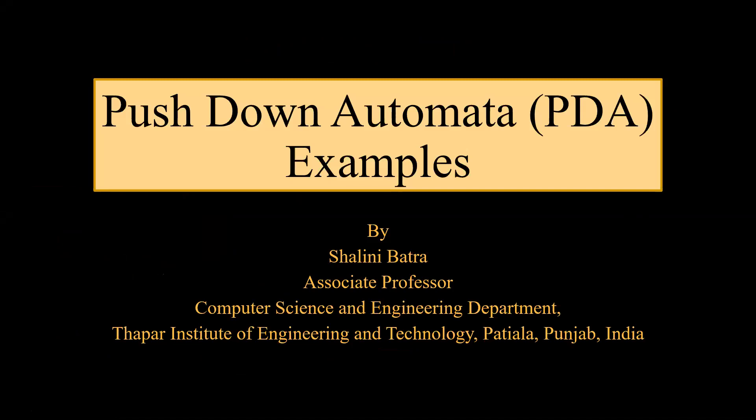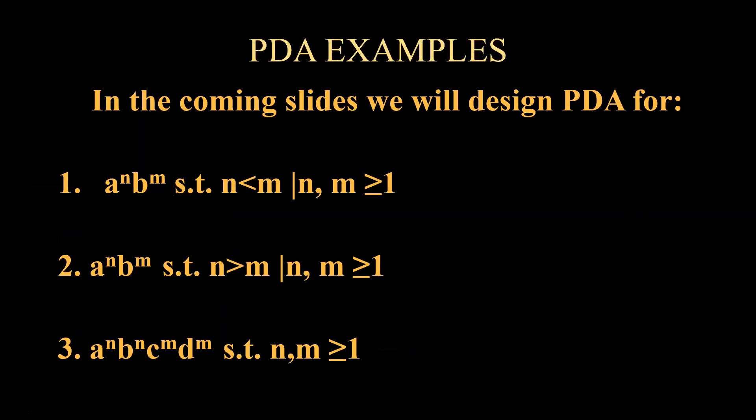Hello everyone. Today we will be discussing some examples of pushdown automata. We have already covered two videos on examples and this is the third one in that set. Today we will be covering three pushdown automatas: aⁿbᵐ such that n is less than m, meaning the number of a's is less than the number of b's, and n, m ≥ 1.